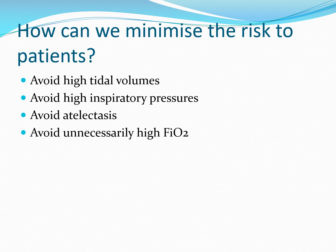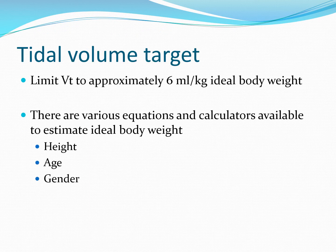So how do we go about minimising the risk to our patients? Based on what we've covered, we should seek to avoid high tidal volumes, avoid high inspiratory pressures, avoid atelectasis and collapse, and avoid unnecessarily high fractions of inspired oxygen. In terms of avoiding high tidal volumes, we would usually seek to limit our tidal volume to approximately 6 mls per kilo ideal body weight for that patient.